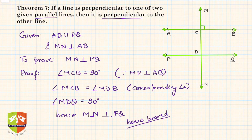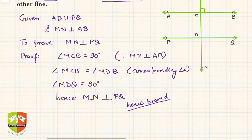So hence if a line is perpendicular to one of the parallel lines, it will be perpendicular to other parallel lines as well. And it is not restricted only to two parallel lines.